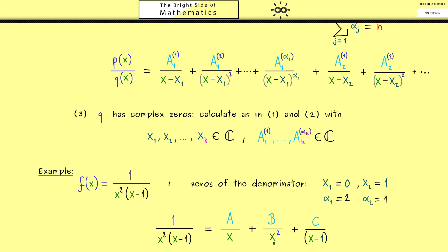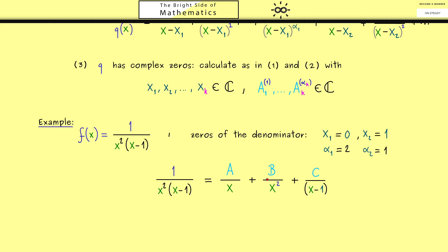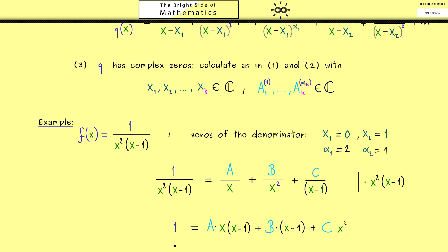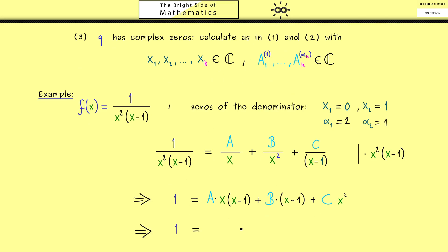To find coefficients a, b, and c, the first step is to multiply both sides by the denominator q. This makes all fractions vanish and everything looks much nicer. In the first part one x cancels, in the second part x squared cancels, and in the last part only x squared remains. Now we have a polynomial on both sides, and the equation tells us they must be equal.